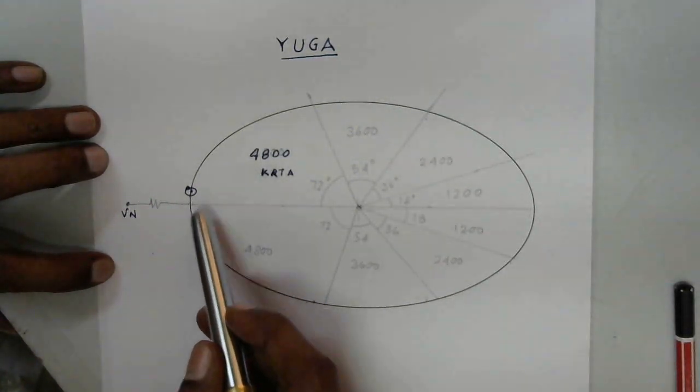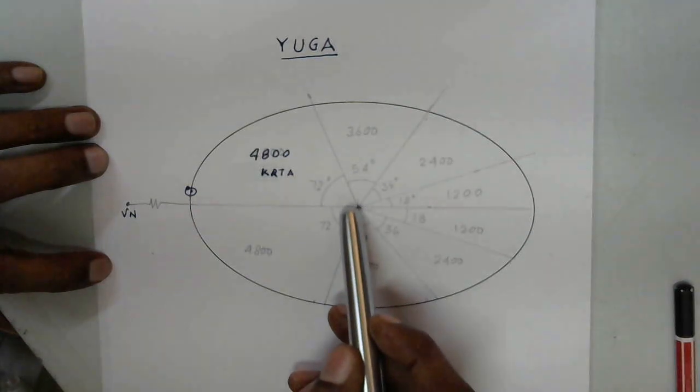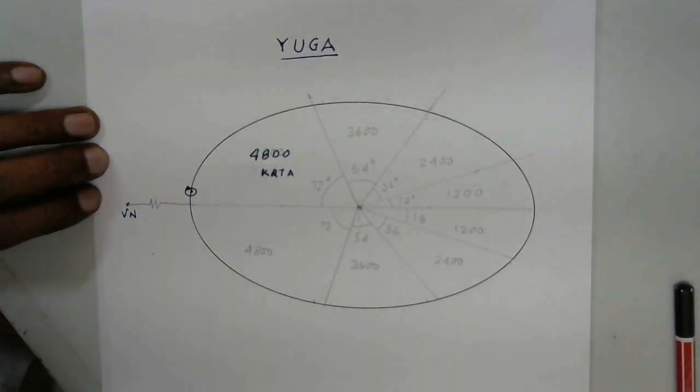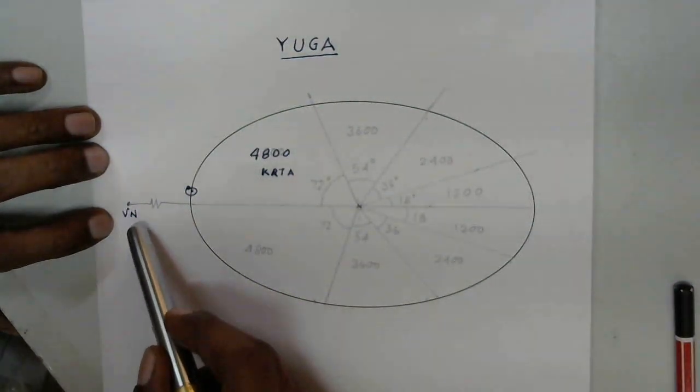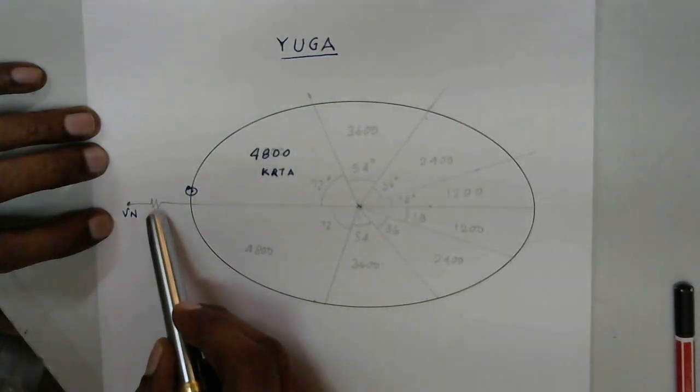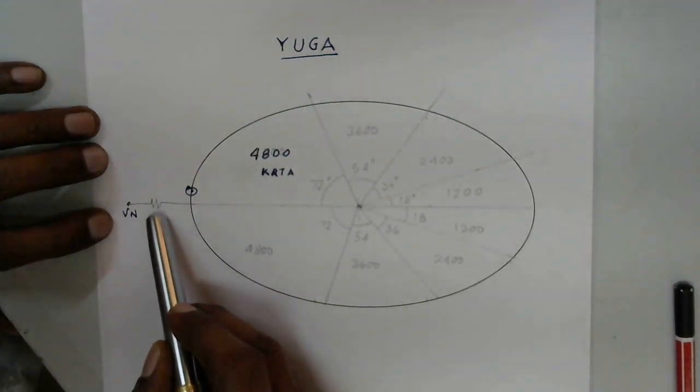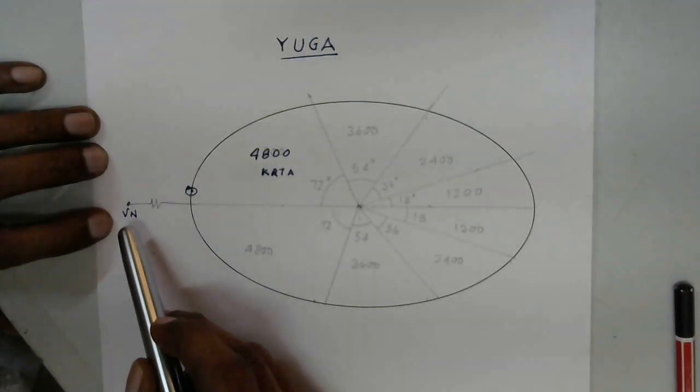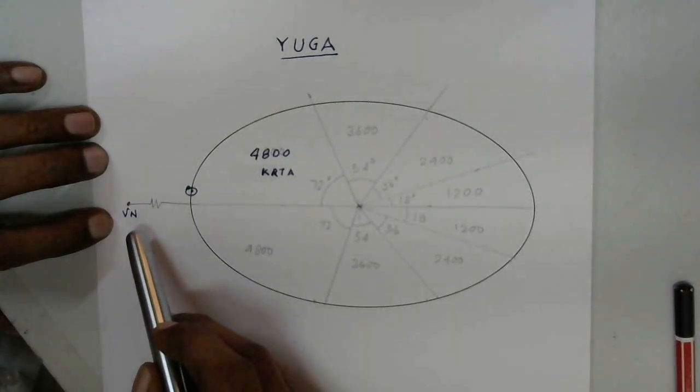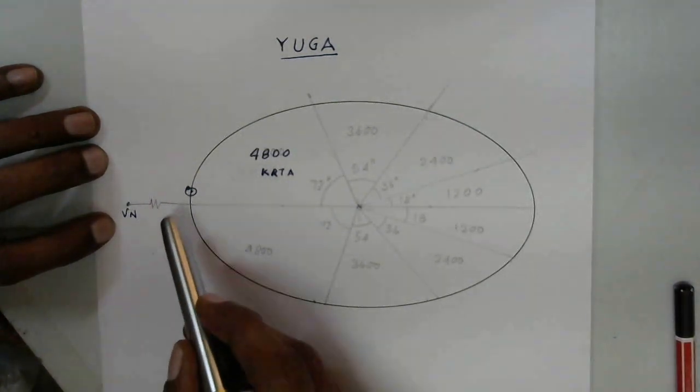This center also rotates with a great grand center which I have marked here with a distance shown as very large. In Indian astronomy this is called Vishnu Nabhi. So let us see this.